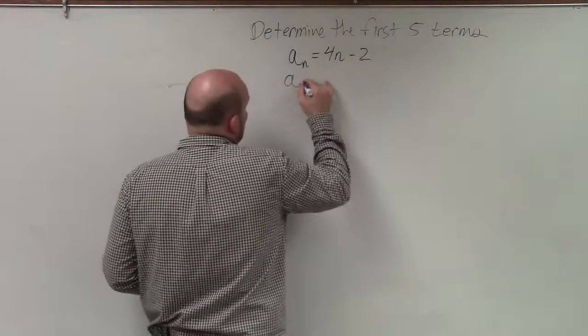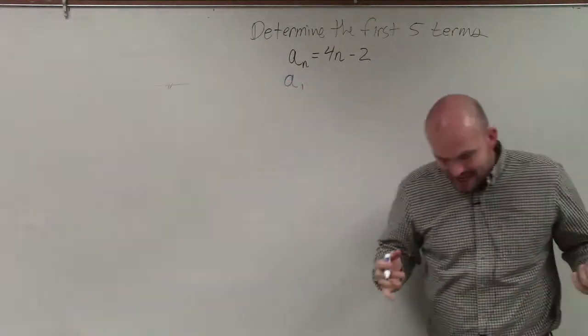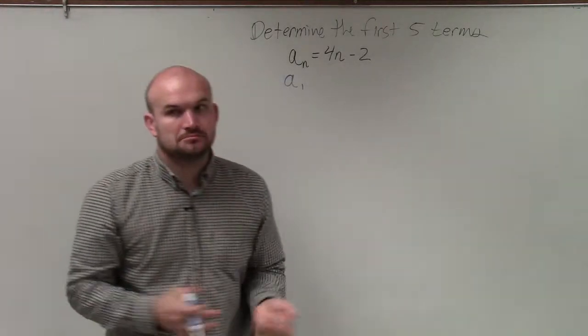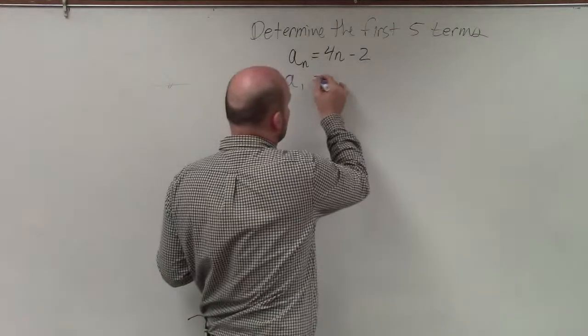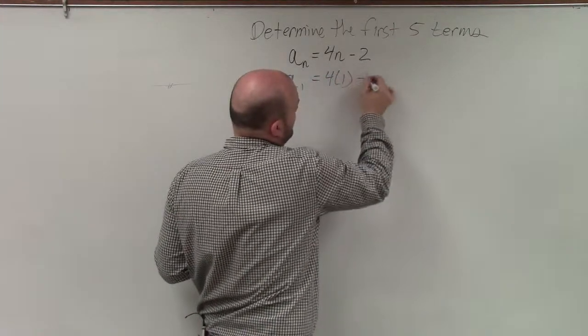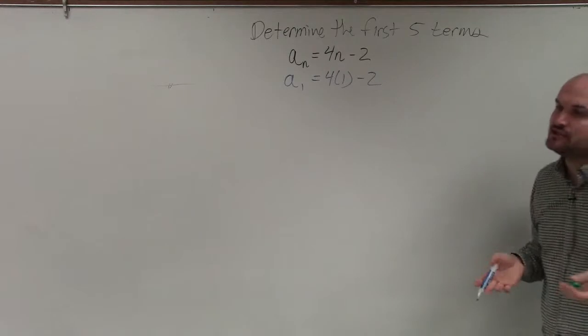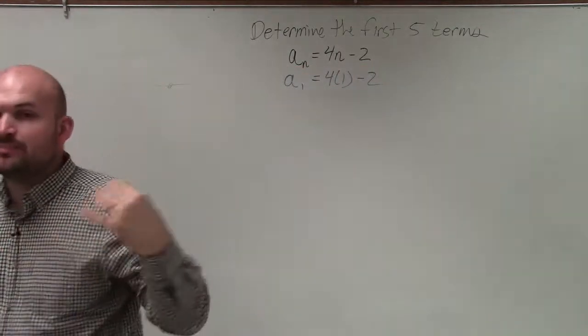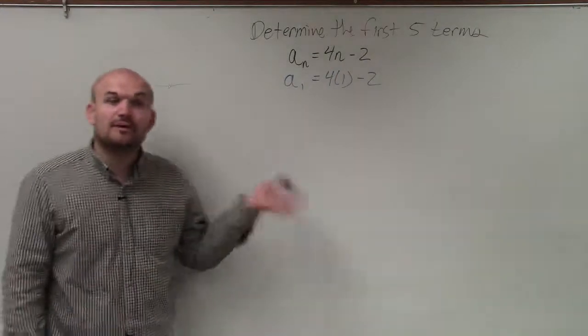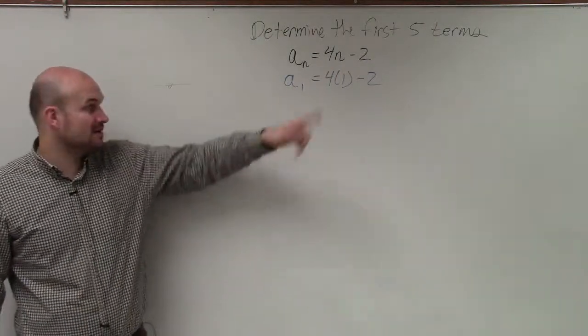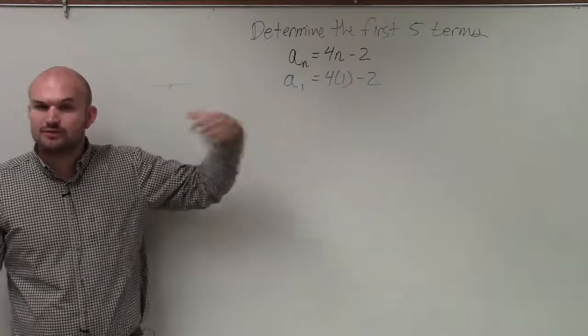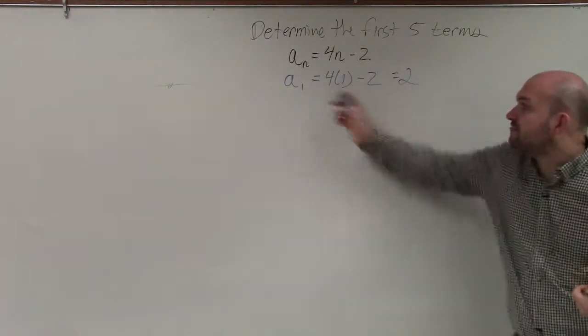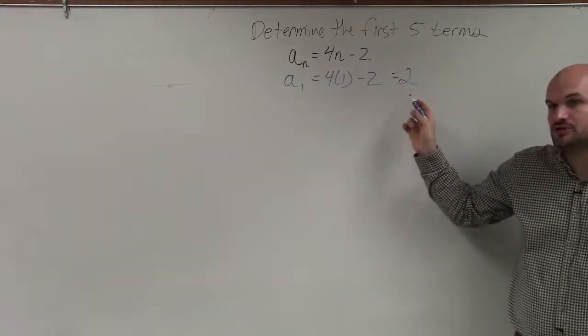To find the first term, we're going to replace n with 1. So I'm going to do 4 times 1 minus 2. Now it's very important when we evaluate that we apply the order of operations. Remember, order of operations says we need to multiply and divide before we add and subtract. So I multiply 4 times 1, which is 4, then subtract 2, which is 2. So the first number in the sequence equals 2.